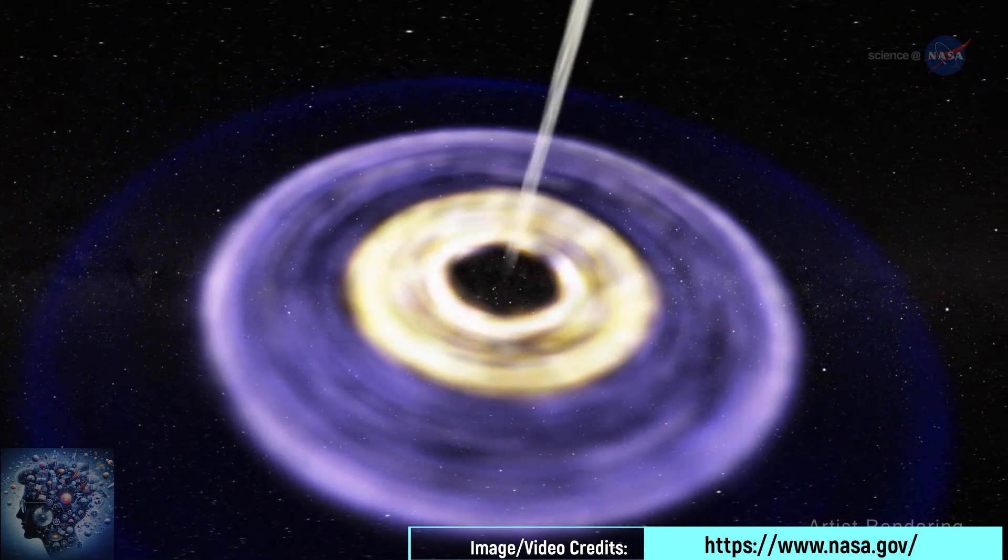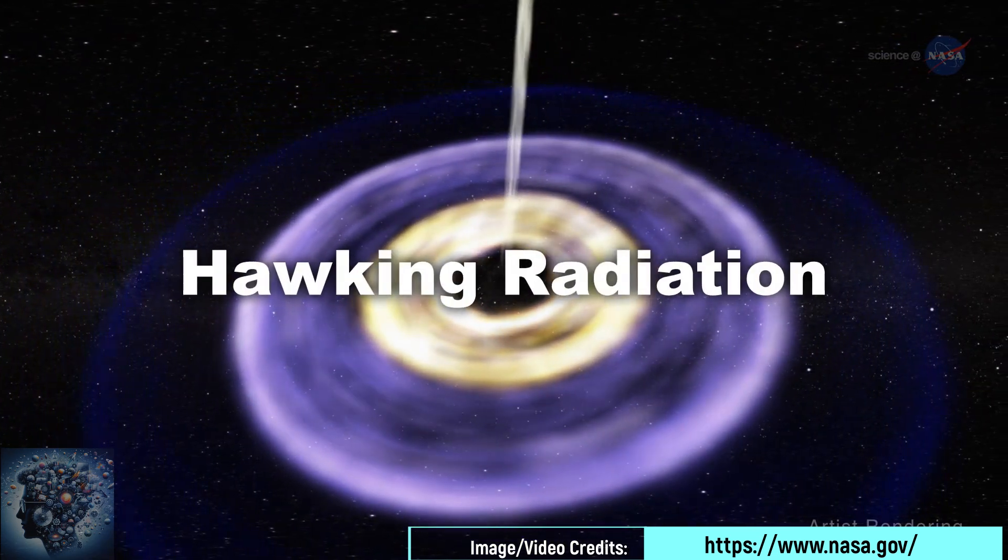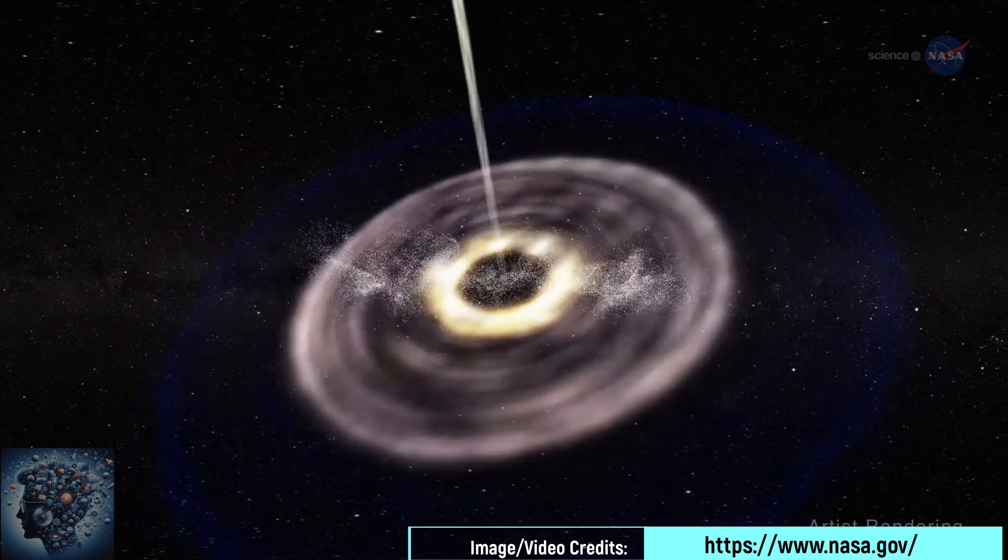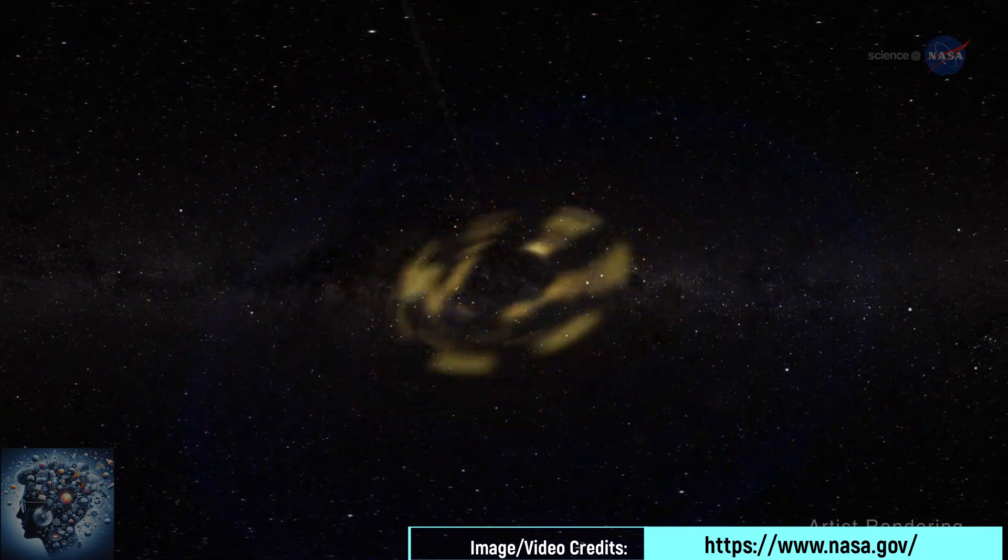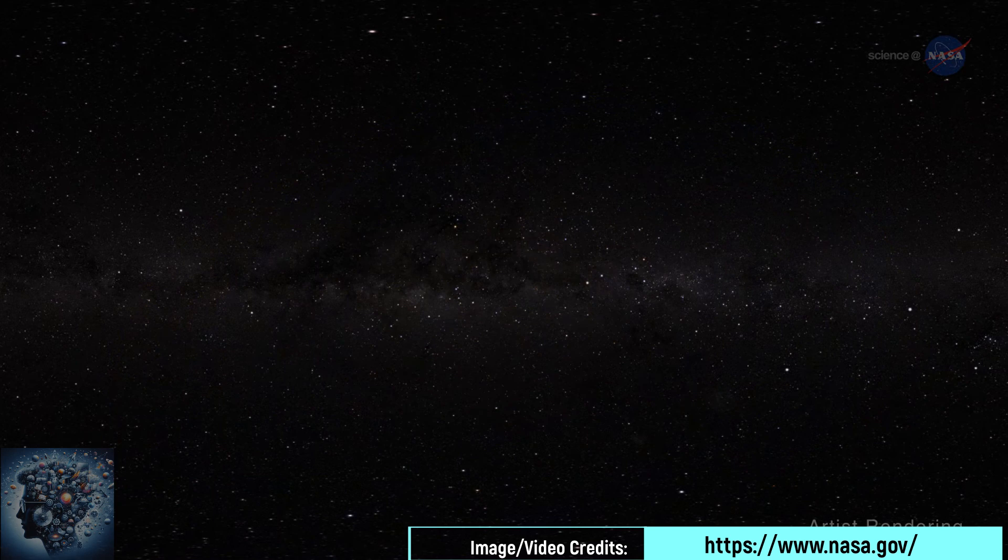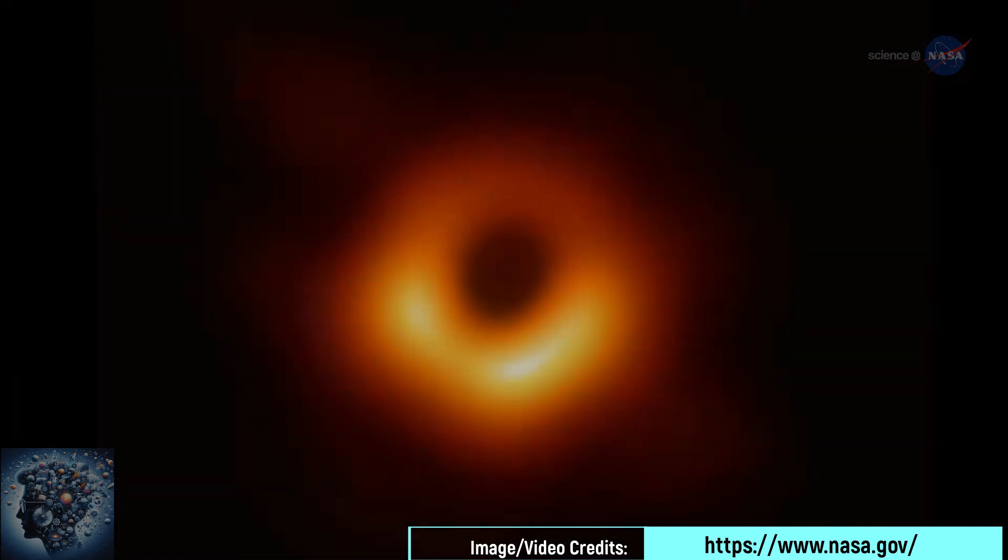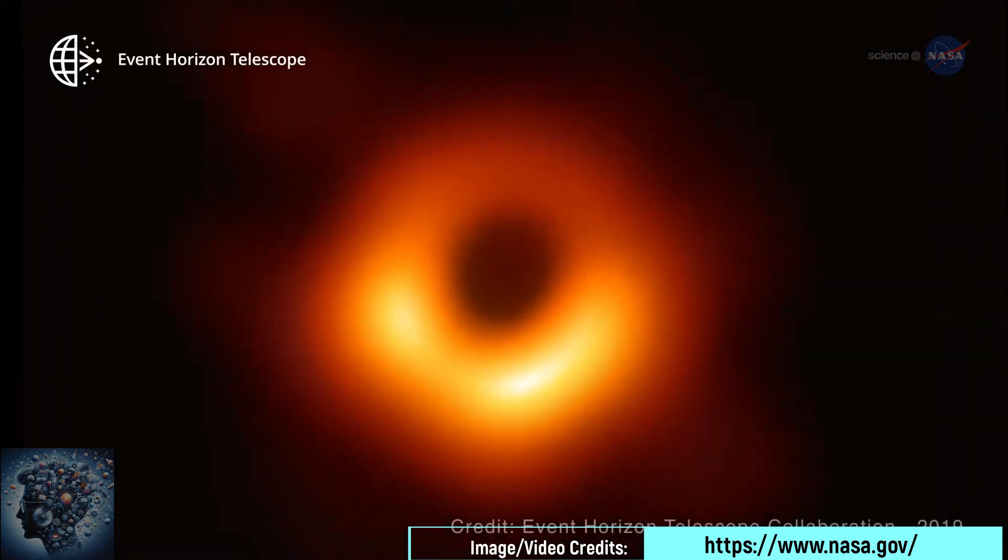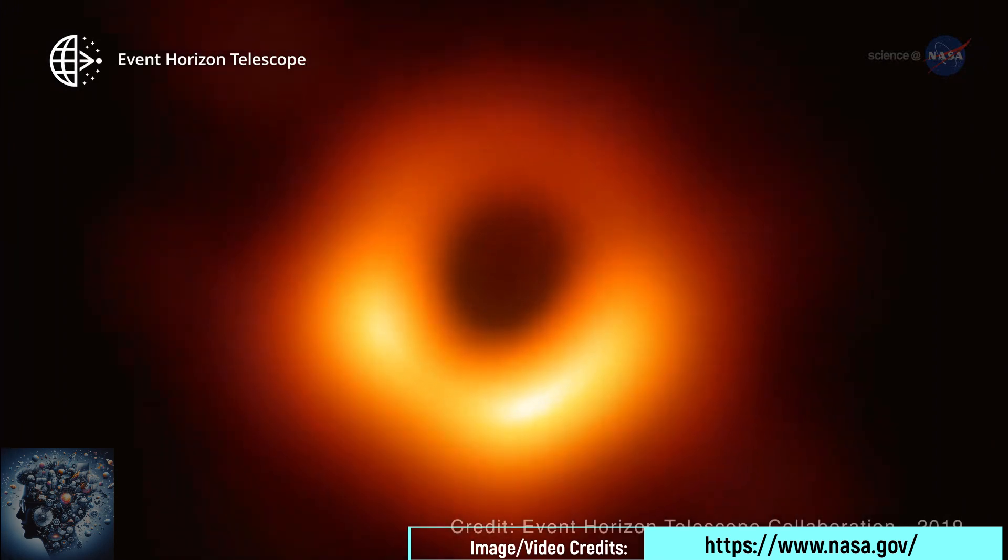And finally, the supermassive ones, larger than 10,000 solar masses, a category where we find the Sagittarius A star. These black holes are commonly found at the centers of galaxies. The hypothesis is that a large part of galaxies has a supermassive black hole at their centers.